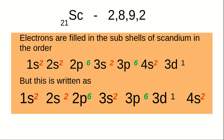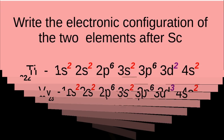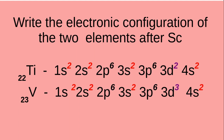Based on the increasing order of energy, once 4S is filled, the next electron should go to 3D. That is how scandium gets its electronic configuration 2-8-9-2. Similarly, in titanium and vanadium, we can write their electronic configurations.